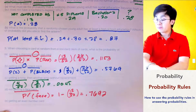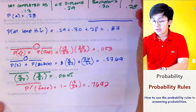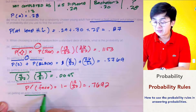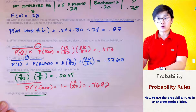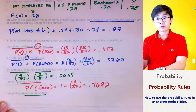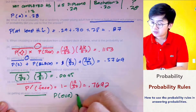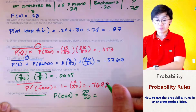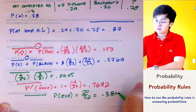That's problem letter D. For the last problem, letter E, what's the probability of getting an even-numbered card? The even number cards in a standard deck are 2, 4, 6, 8, and 10 — that's 5 even numbers across 4 suits, giving 20 even-numbered cards. So the probability is 20/52, which equals 0.3846.